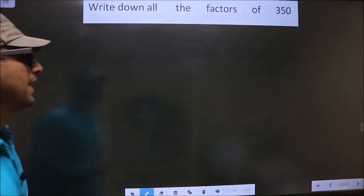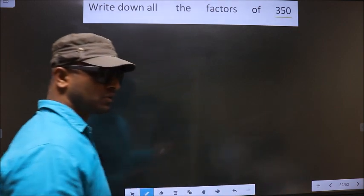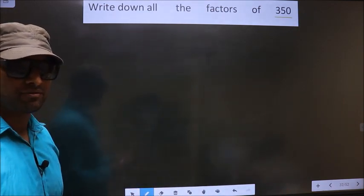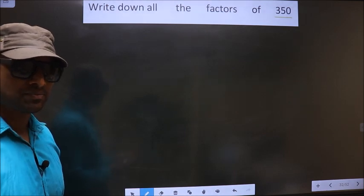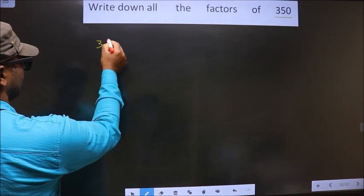Write down all the factors of 350. To write all the factors of 350, first we should do the prime factorization of it. So let us do. That is 350.